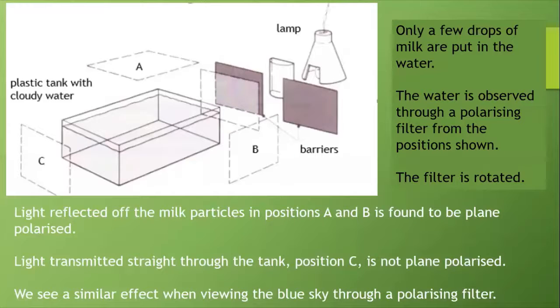This classic experiment from the old Nuffield A Level Physics textbook shows a light source, a lamp, with light passing between barriers into this plastic tank with cloudy water in it. It's made slightly cloudy by putting a few drops of milk into it. The water in the tank is observed through a polarizing filter from the positions shown A, B and C. We rotate the polarizing filter while looking through it.